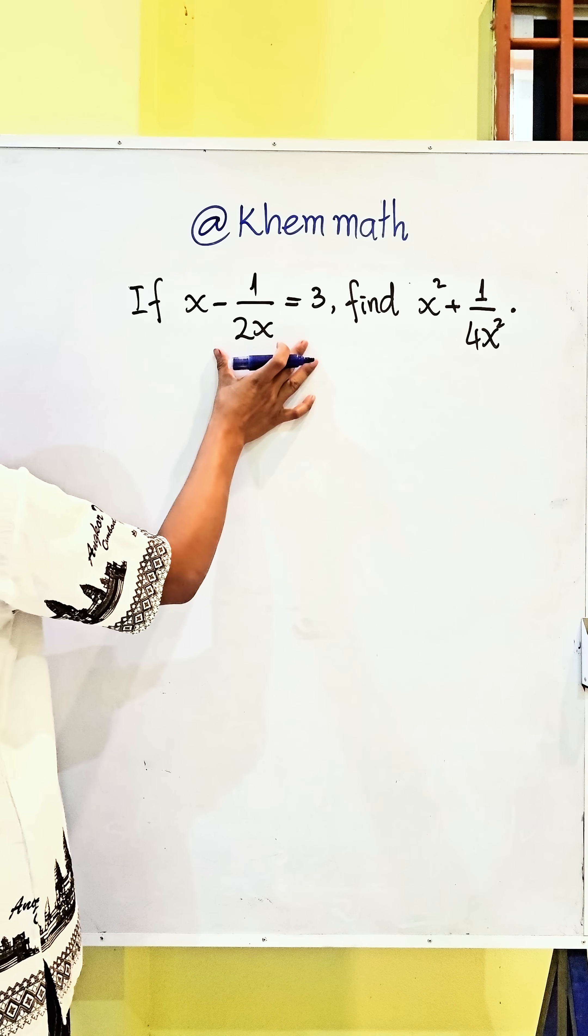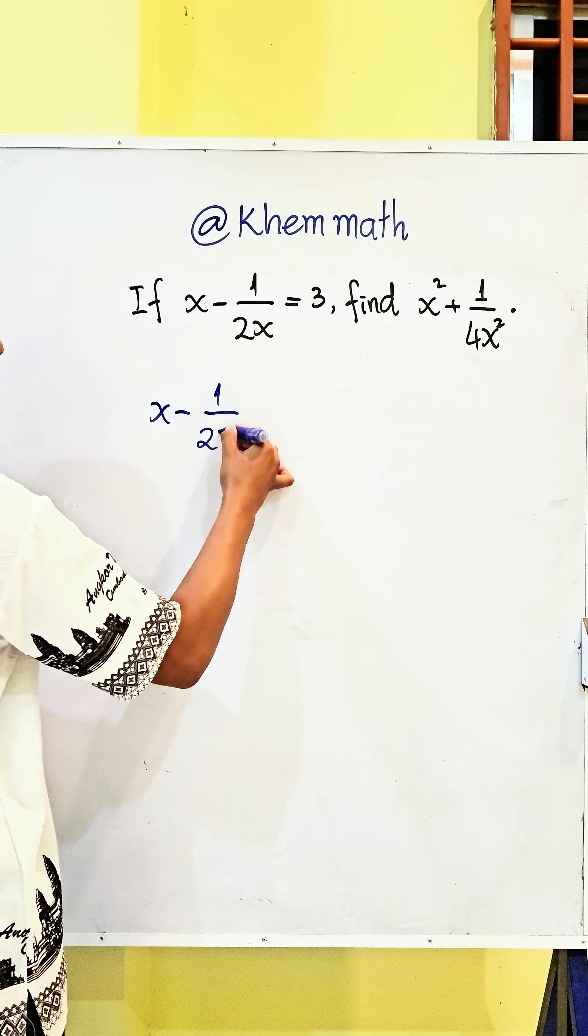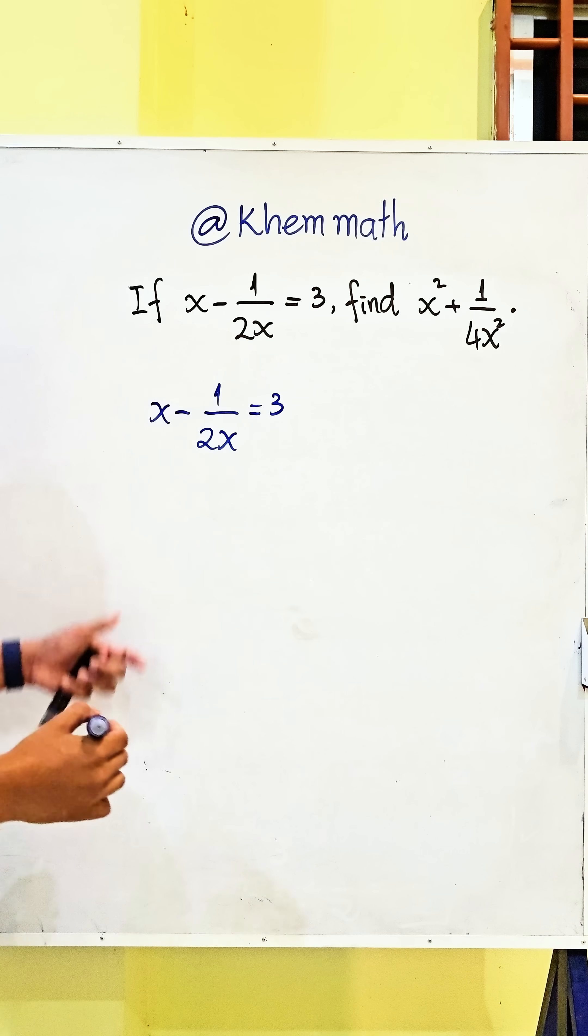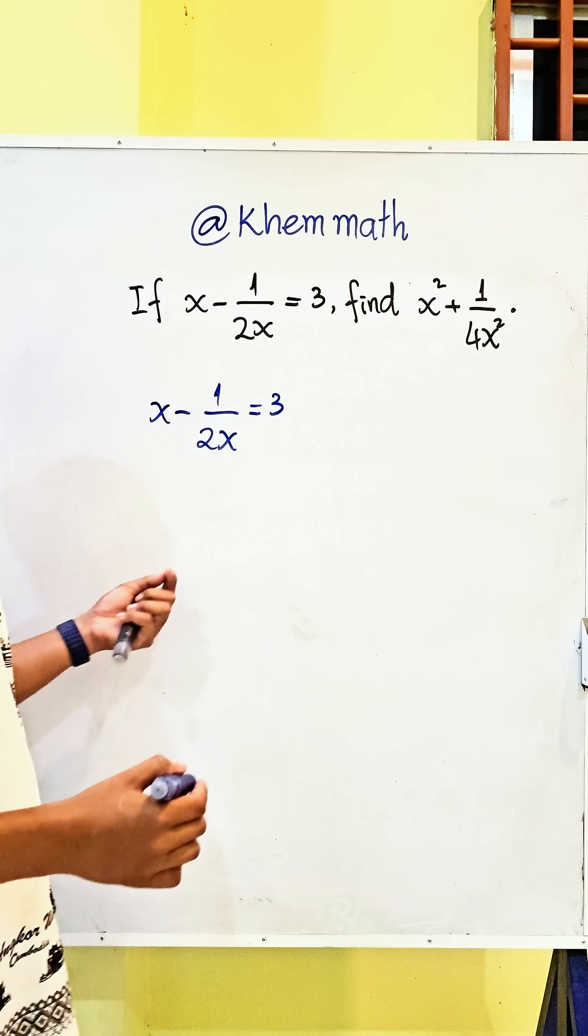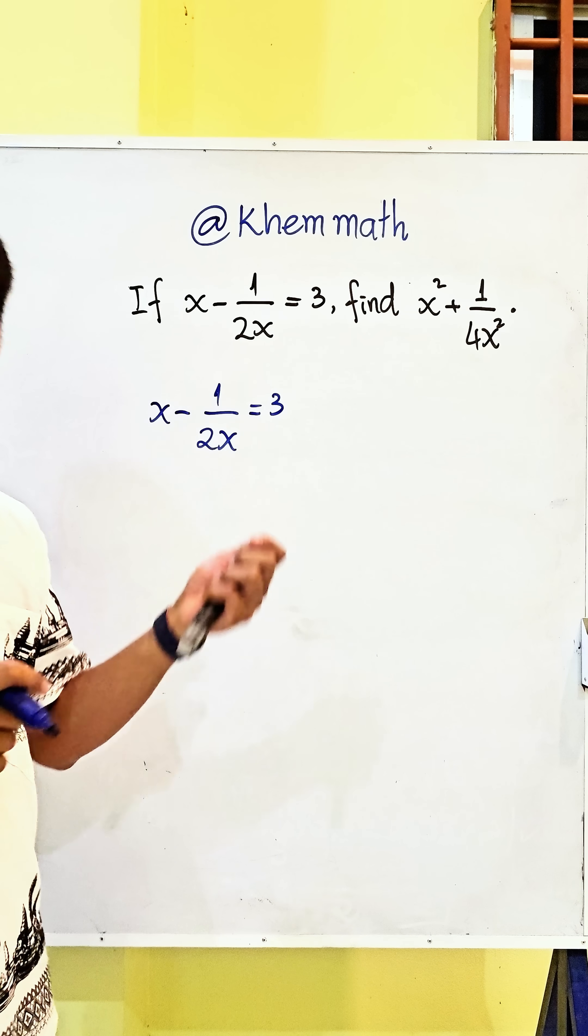First we use this equation: x minus 1 divided by 2x equals 3. If you solve this equation to find it, it's really hard, so we must do like that.